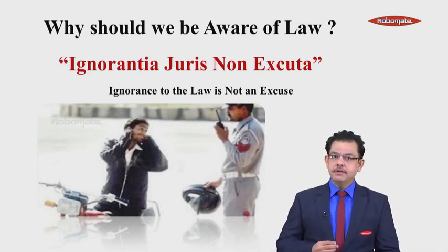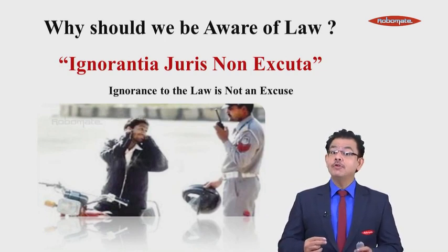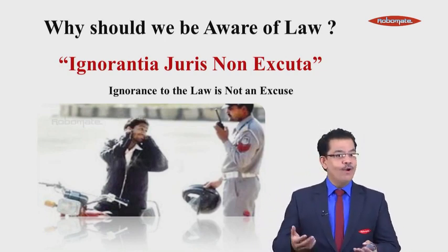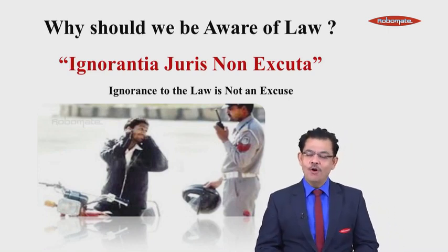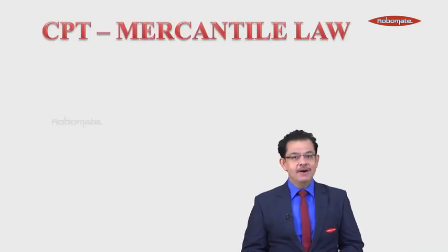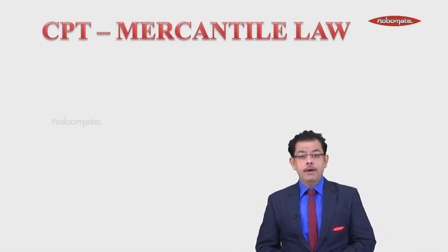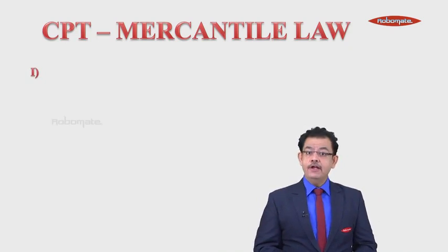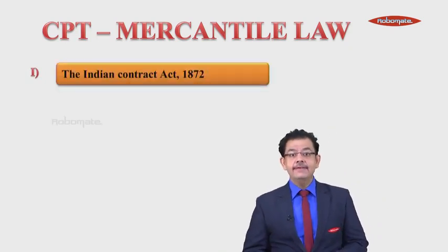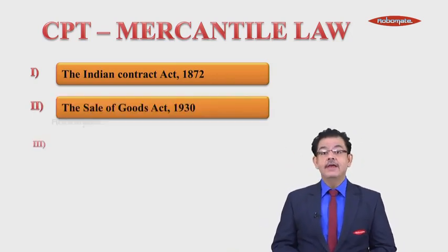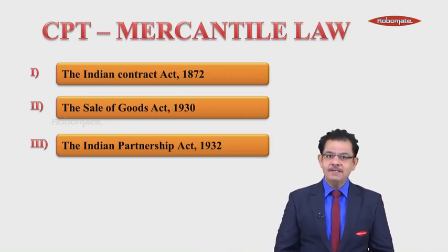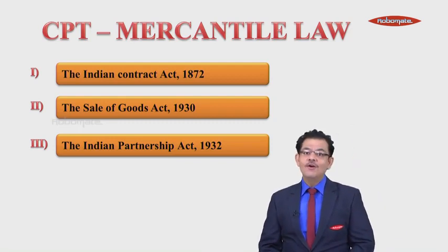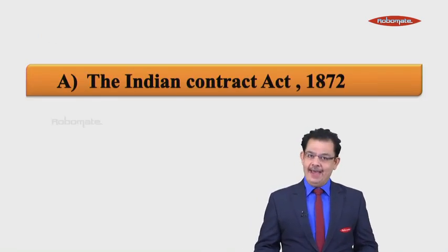So those two points about the law are clear: what is law, and why we must be aware of it — because of the maxim 'Ignorantia juris non excusat.' Now we can proceed with CPT mercantile law. Your CPT mercantile law comprises three acts: the first is the Indian Contract Act of 1872, the second is the Sale of Goods Act 1930, and the third is the Indian Partnership Act 1932. That is the syllabus, and we start with the Indian Contract Act of 1872.